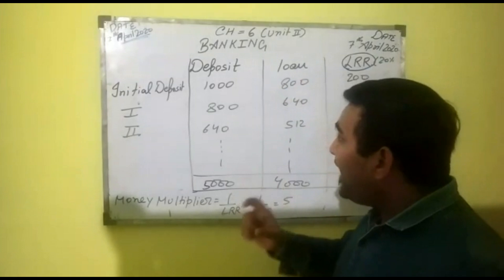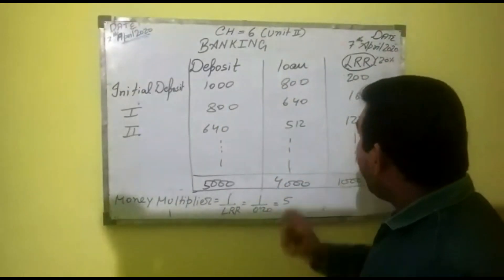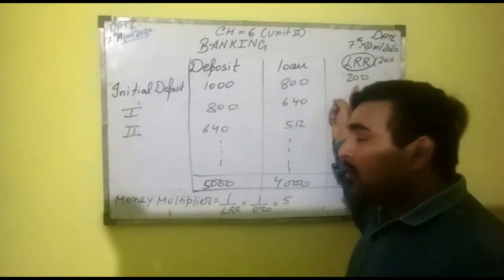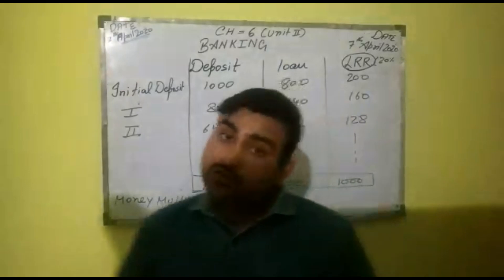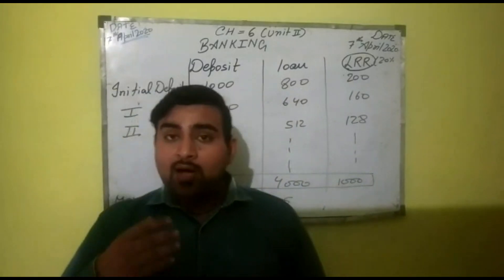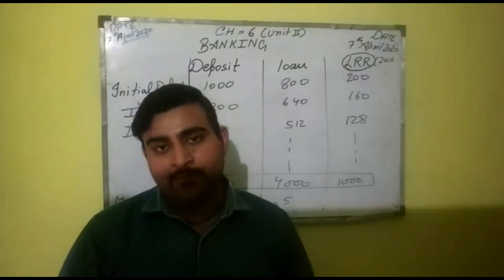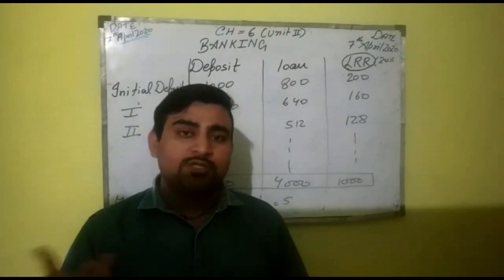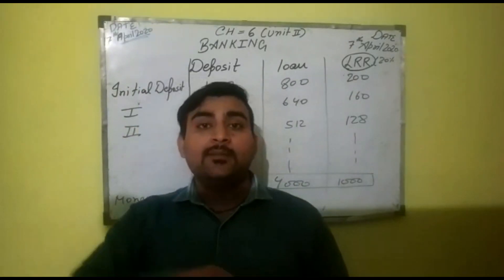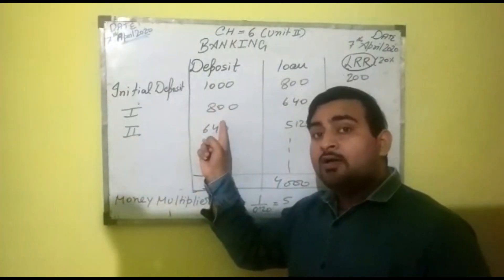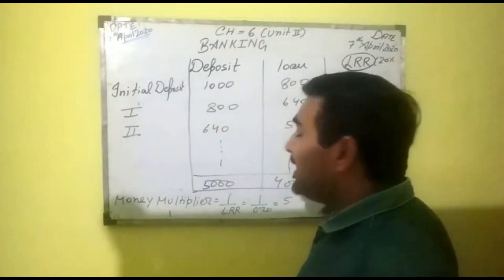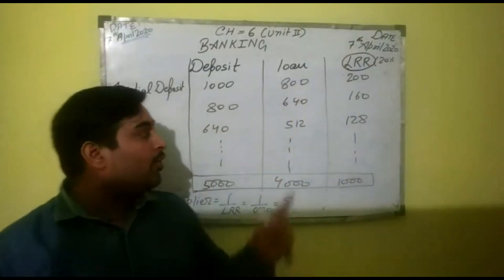Suppose the initial deposit in the bank is 1000 crore. Then the bank is obliged to keep a reserve of 20%, that is 200. Then the rest amount — 800 — can be given as loan. Now, the loan also goes into someone's account, and since all payments are done through the bank, whoever that person pays with the loan, the payment goes into their account. So a new deposit of 800 is created in another account. Then 20% of that new deposit — that is 160 — is kept as reserve, and the rest is given as loan. This process continues.